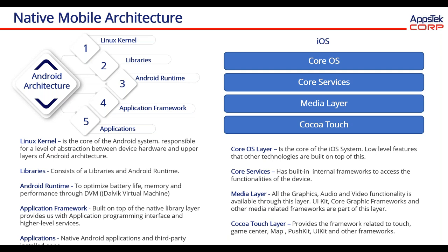Looking at iOS architecture, it has a four-layer structure. The Core OS layer is the core of the iOS system, containing all low-level features. Other technologies are built on top of this, such as the Bluetooth framework, external access framework, security services framework, and many other frameworks. Core Services are built for the internal framework to access the functionalities of the device, like address book, CloudKit framework, Core Data frameworks, location, motion, HealthKit, social, and many other frameworks.